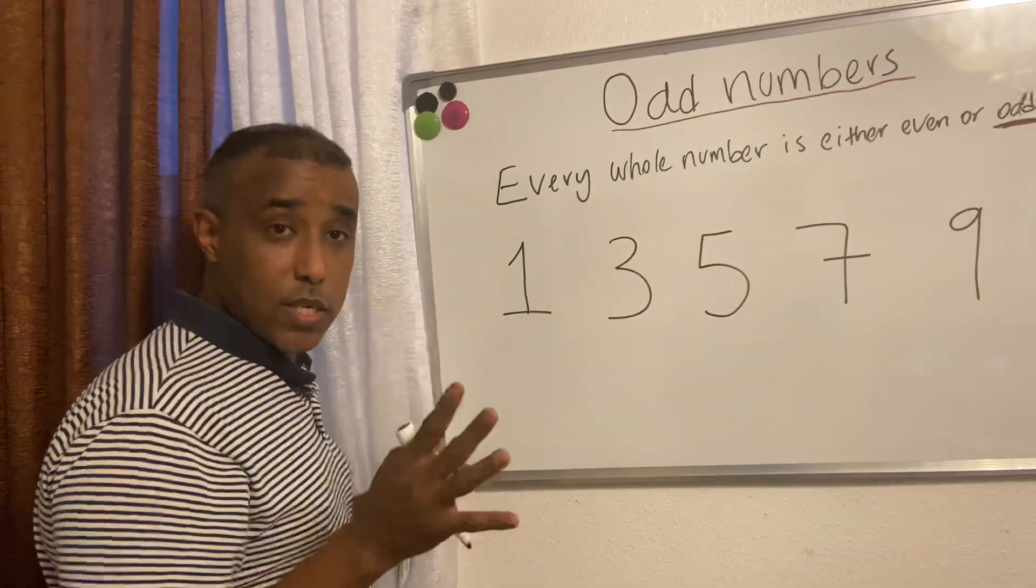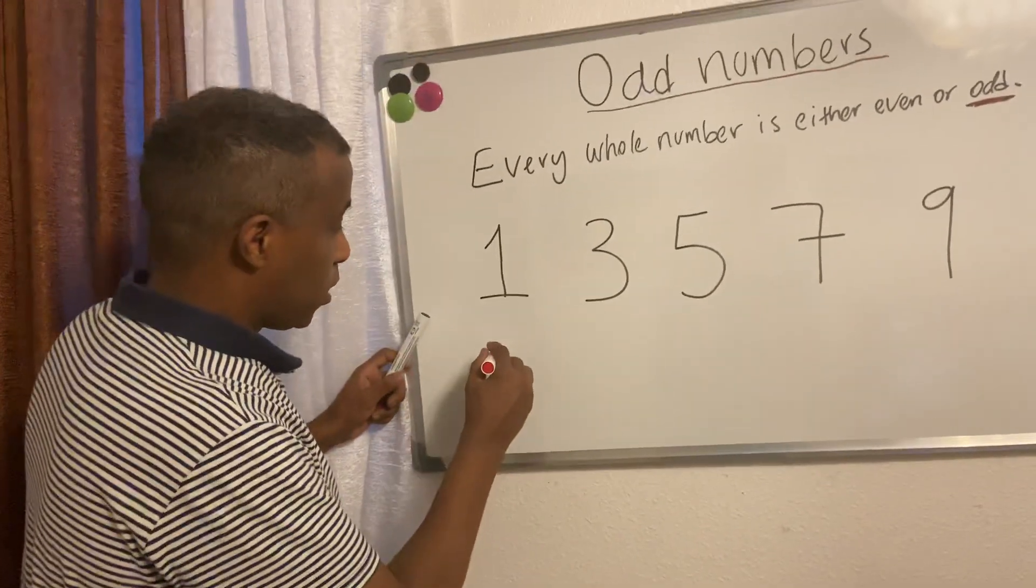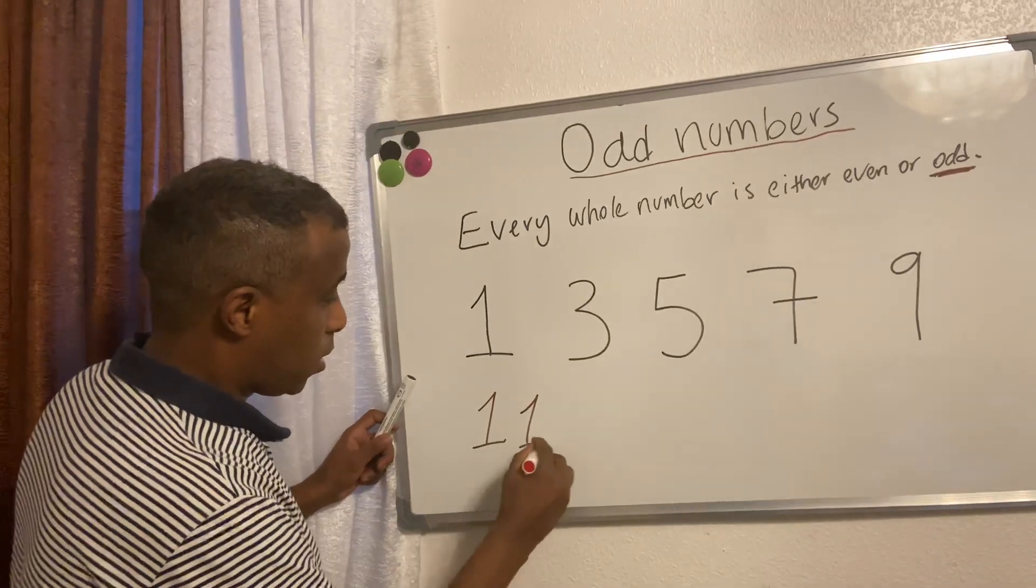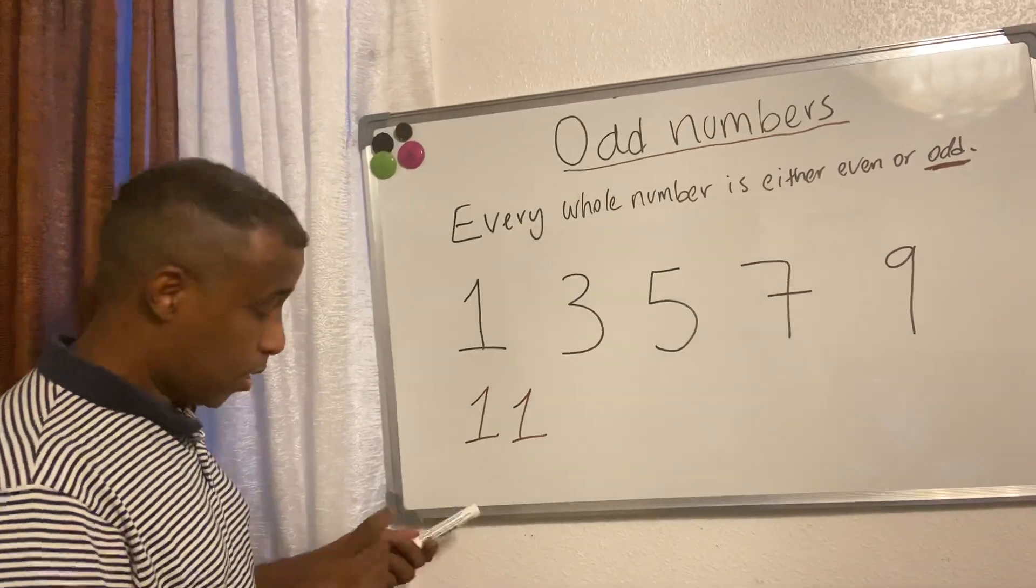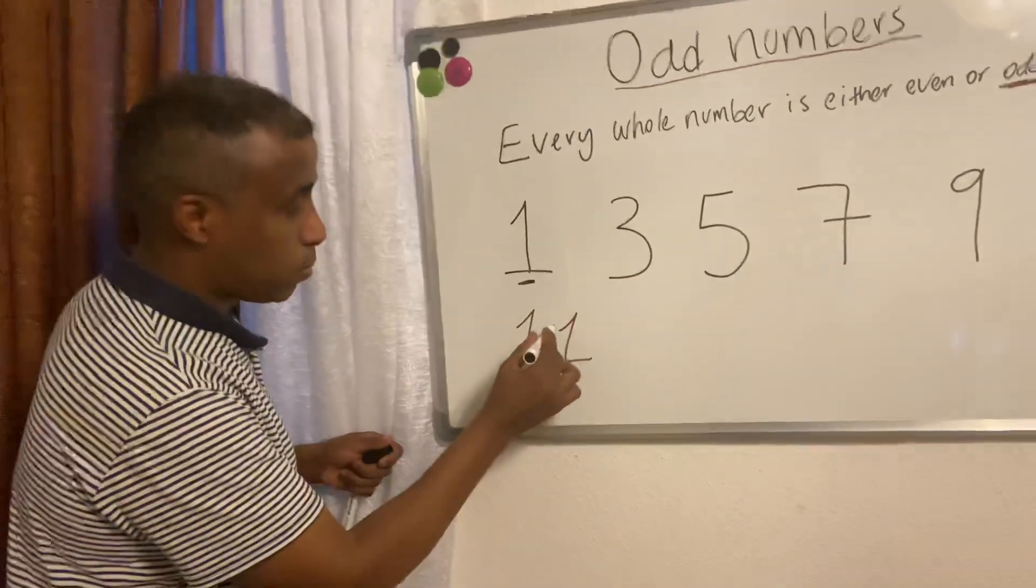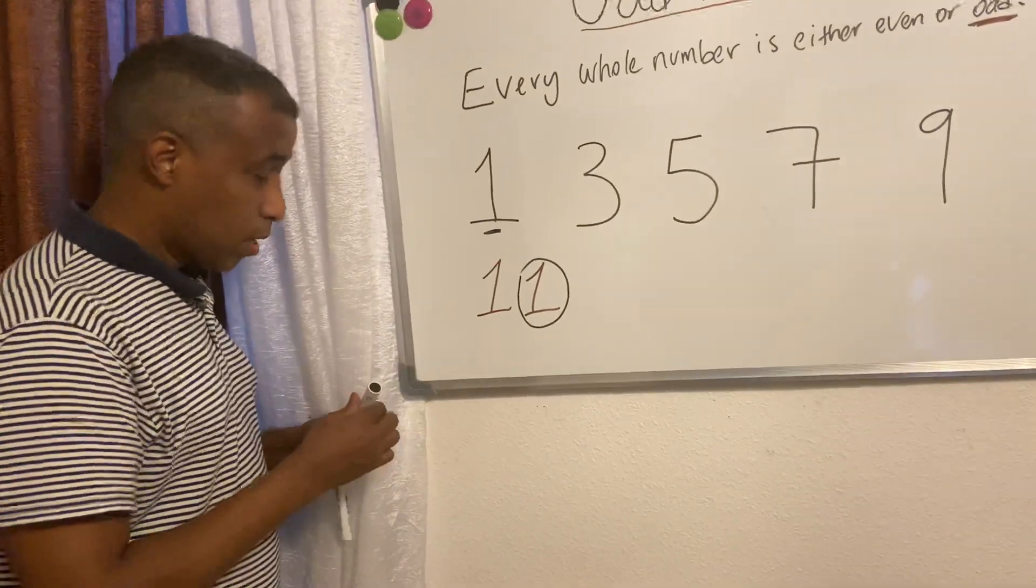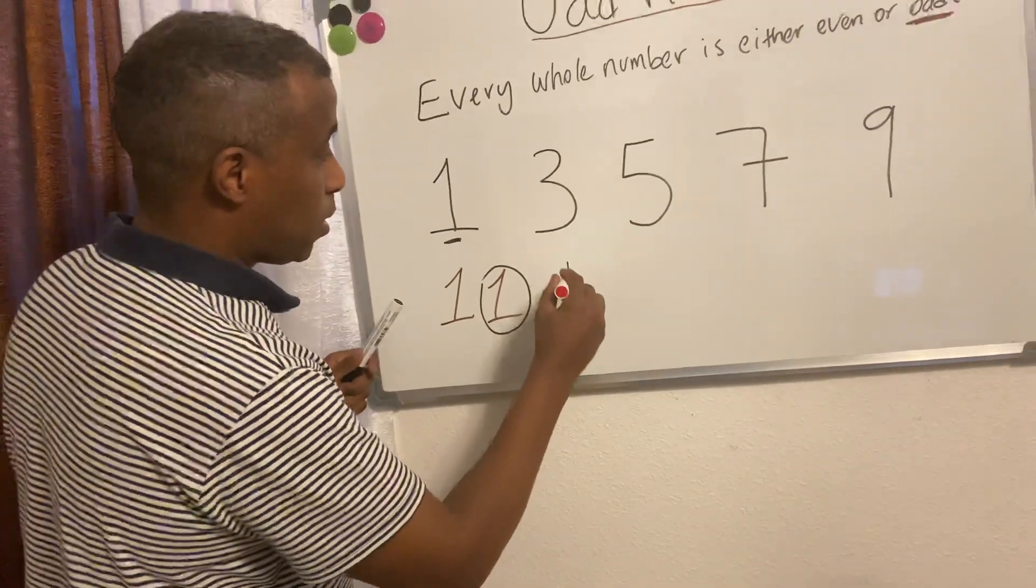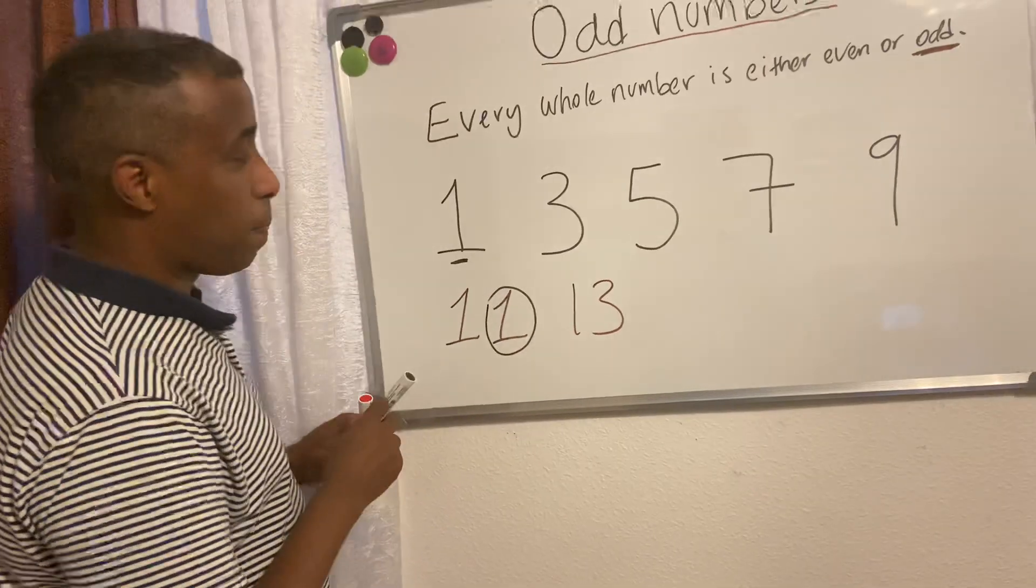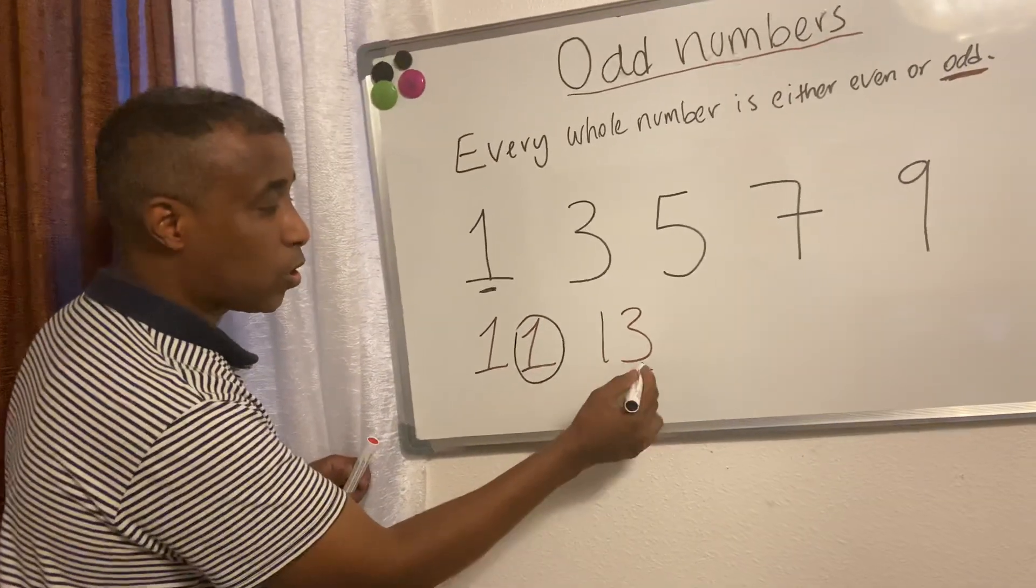Okay, let's do some examples here. Let's do 11. Now we know 1 is odd, so this is odd. Let's define number 13. We know number 3 is odd, that means 13 is odd.